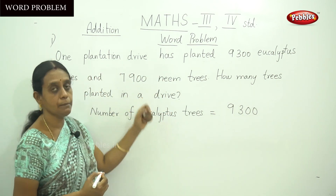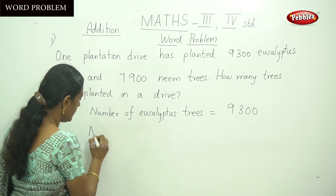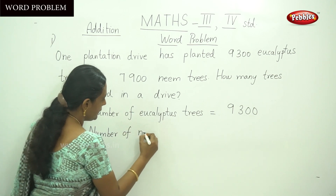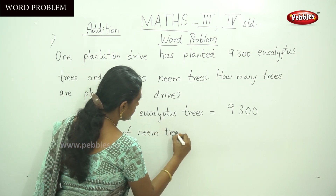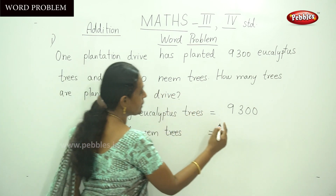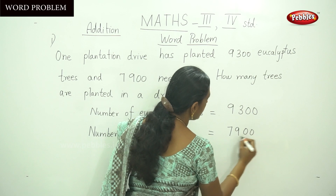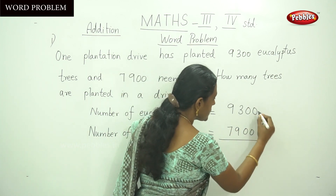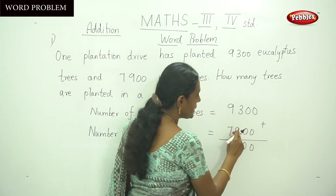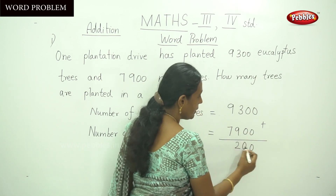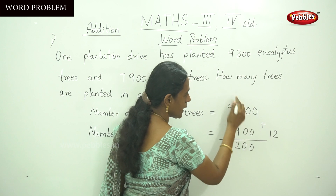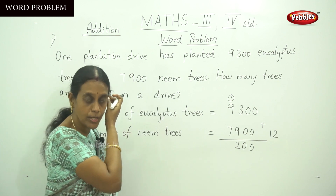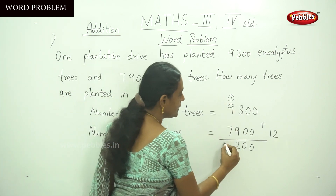Number of eucalyptus trees = 9300. Number of neem trees = 7900. Now add both numbers. 0 plus 0 is 0. 3 plus 9 is 12 — write 2, carry over 1. 9 plus 7 is 16, plus 1 carry over is 17 — write 7, carry over 1.